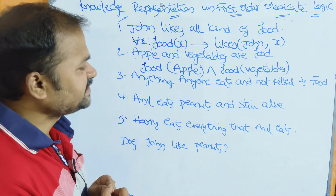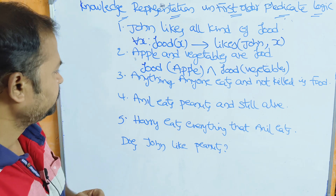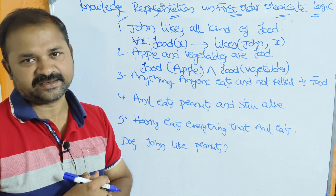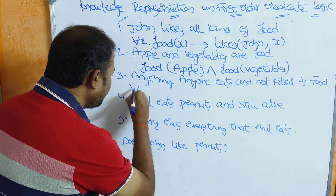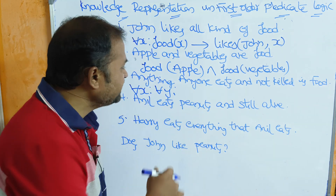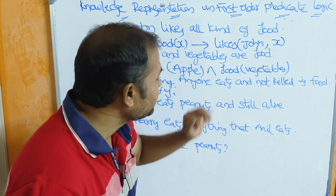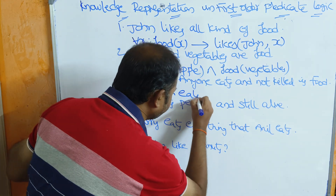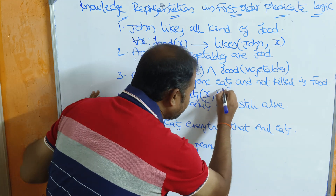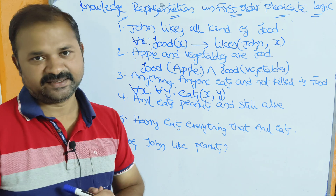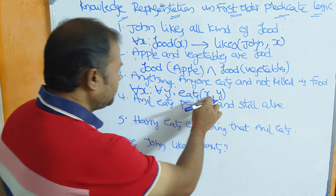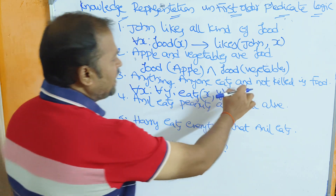The third fact: anything anyone eats and is not killed is food. Here 'anything' refers to the food item and 'anyone' refers to the person — both require universal quantifiers. So for all x, for all y, where x is the person (anyone) and y is the food item (anything). Eats is the predicate: eats(x, y).